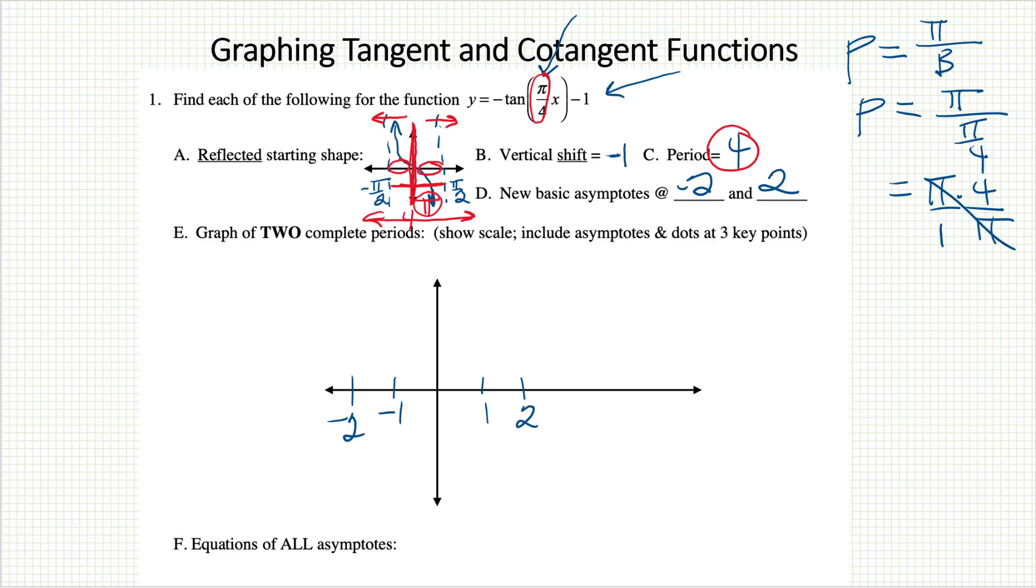I need to move them equally so that the total distance between them is 4. I've marked some scale onto the x-axis. Our job is to graph two complete periods of this function, so we'll take the first one and then we'll just copy it.